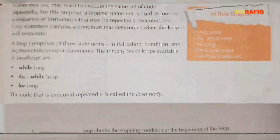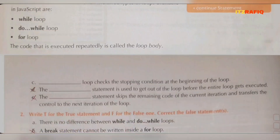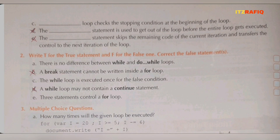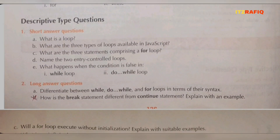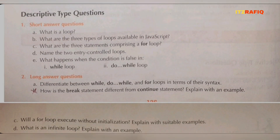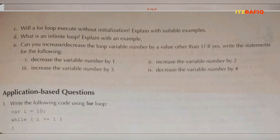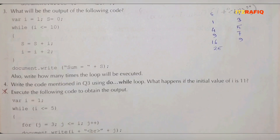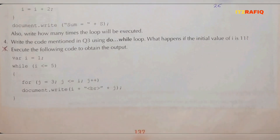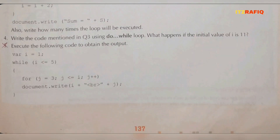Chapter 7: Looping in JavaScript. Fill in the blanks D and E are not required. True and false B and D are not required. Multiple choice all are required. Short answers all are required. Long answers only number B is not required. From application based, number B and number 5 are not required. Note: number 5 is already wrong in the book as well.